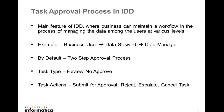The main feature of IDD that helps users to manage the data at various levels between users as a workflow is the task approval process. By default, we have a two-step approval process where you have two steps of user approval. For example, a business user creates or updates data and sends it to the data steward for approval. The data steward reviews it and can either approve, reject, or escalate it to the data manager for approval. So here you can see two steps of approval: one by the data steward and the other by the data manager.